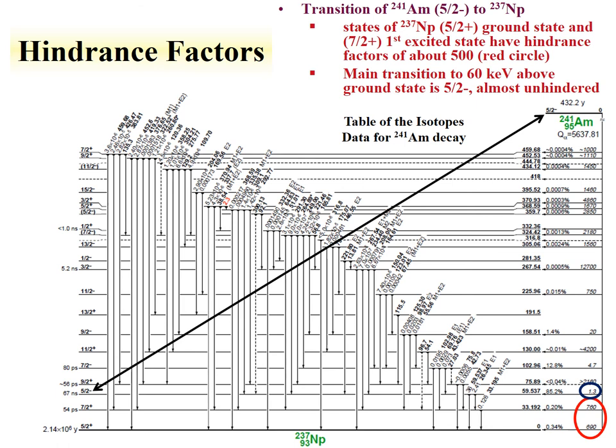The reason the transition to the 5/2- state is unhindered is that the spin and parity of the parent and daughter are the same — the spin's the same and the parity's the same. We see that the ground state transition has the same spin but requires a parity flip, which increases the hindrance. Hindrance factors can range anywhere from 1 up to thousands. This spin and parity match from parent to daughter being the same is manifested by a low hindrance factor.